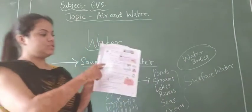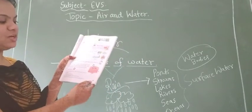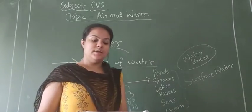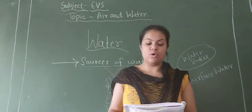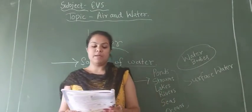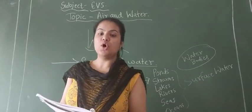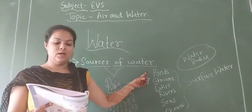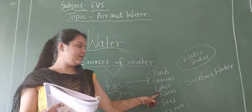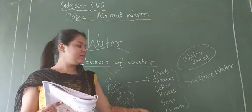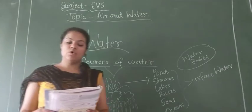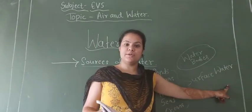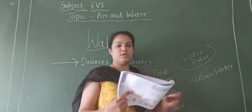Let's read this paragraph sources of water, page number 29. Rain is the main source of water on the earth. Rain water that falls on the ground gets collected in water bodies like ponds, streams, lakes, rivers, seas and oceans. This water is called surface water.